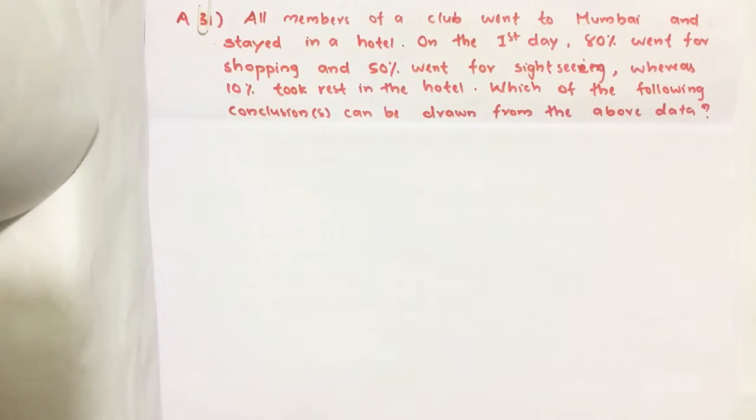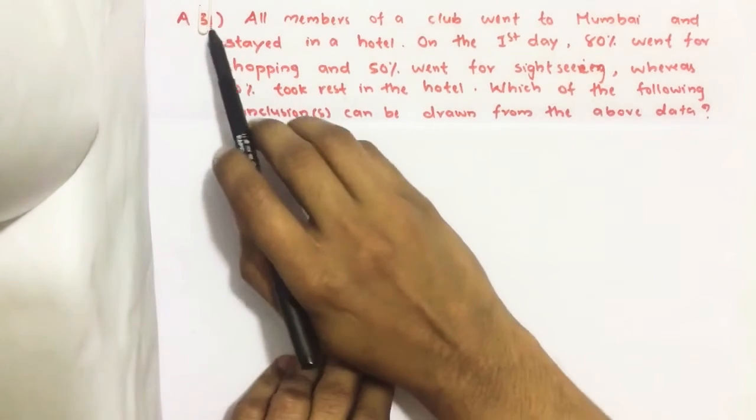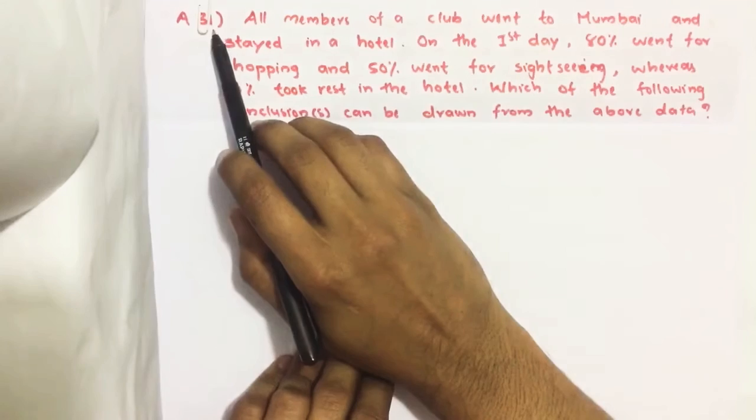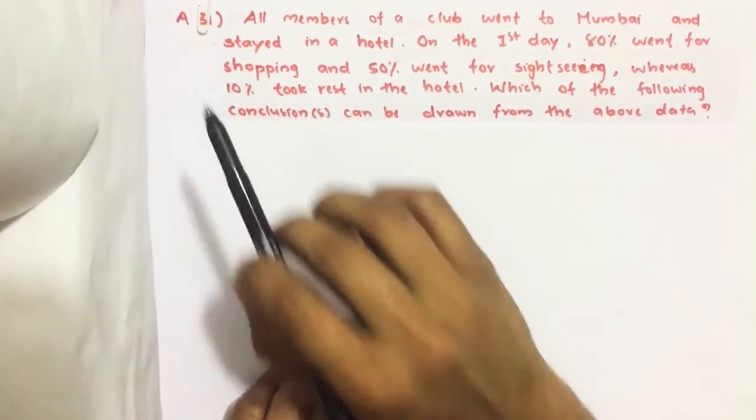Hello everyone. Here I am going to solve the 2019 CSAT question number 31 from question paper series A.